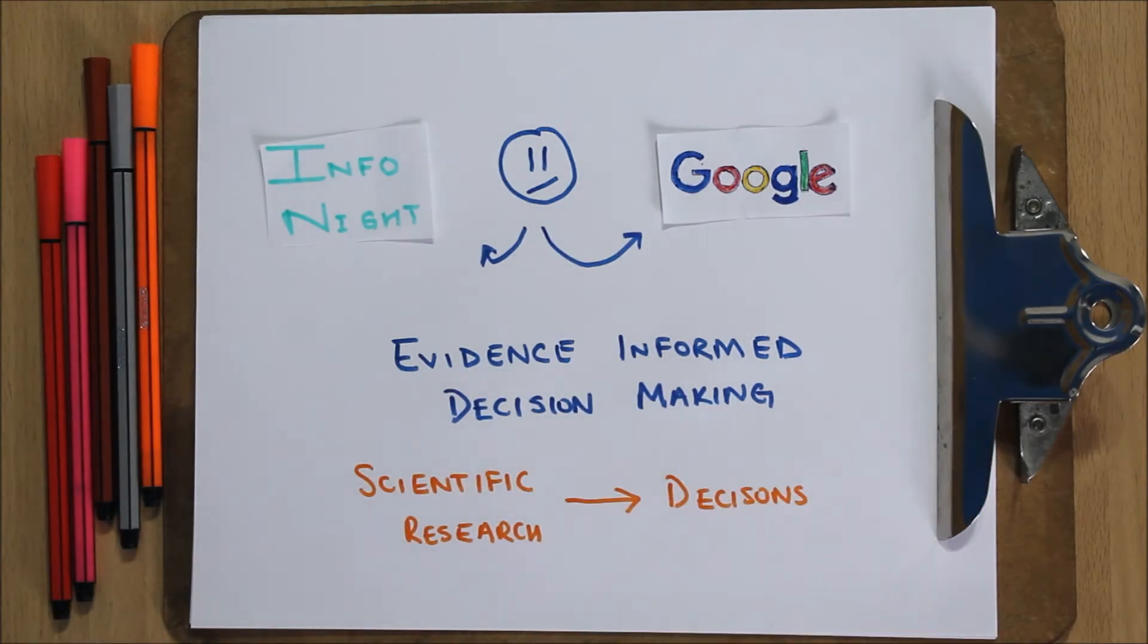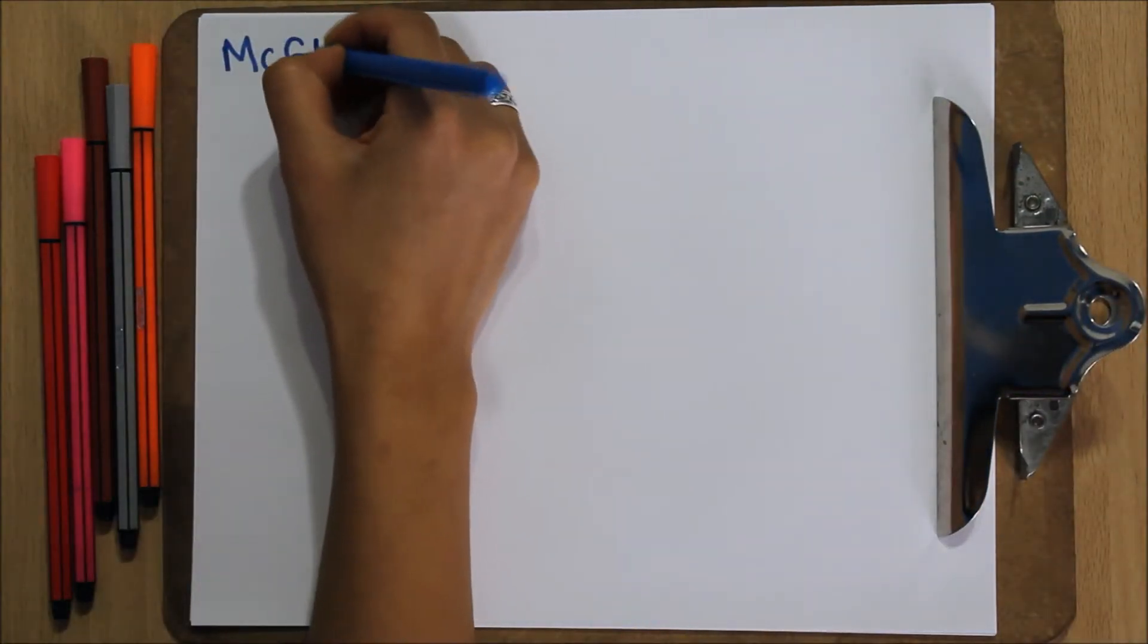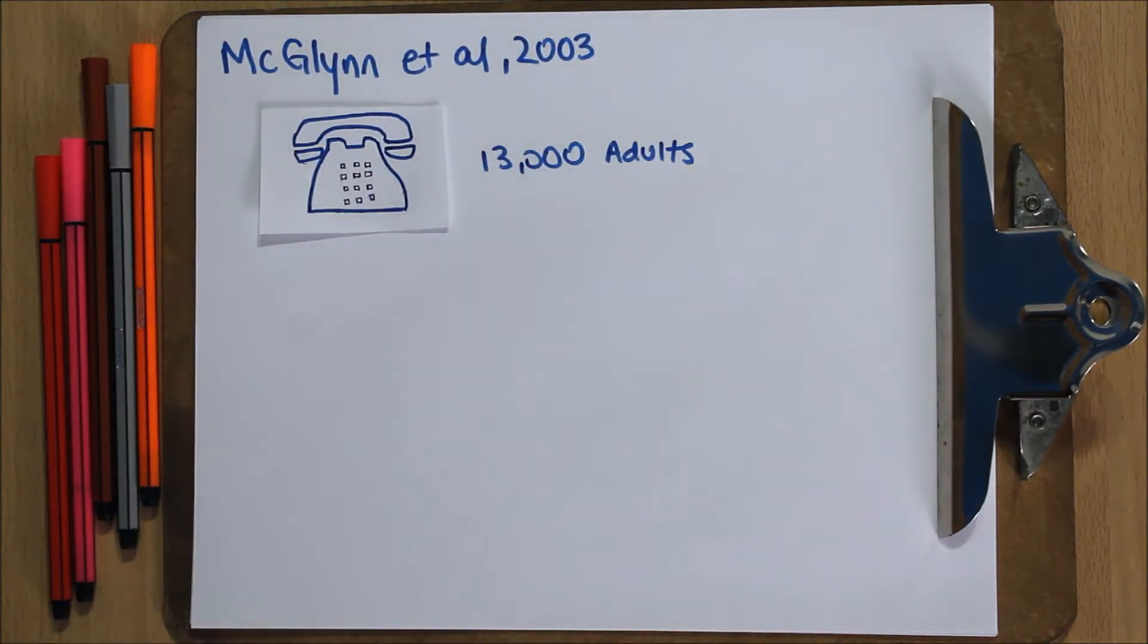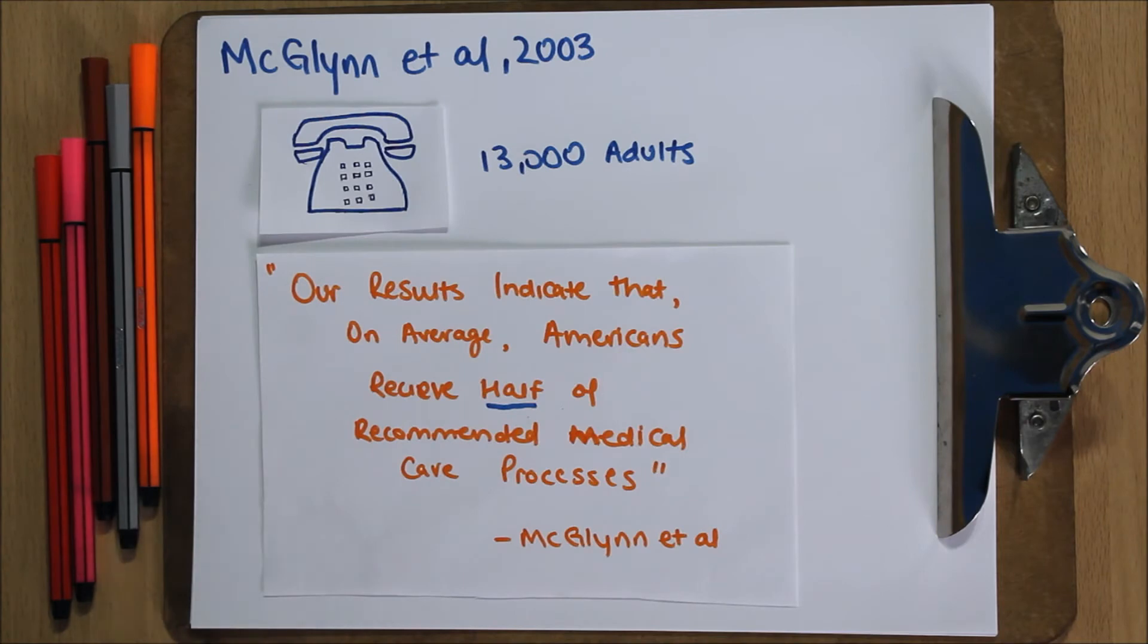Unfortunately, this can be very difficult to do in practice. McGlynn et al. telephone interviewed over 13,000 adults in the United States about healthcare they received. They reported in the New England Journal of Medicine that on average Americans receive half of recommended medical care.